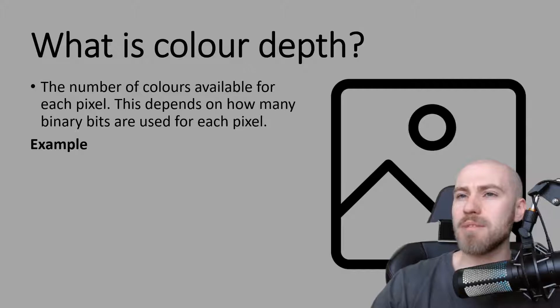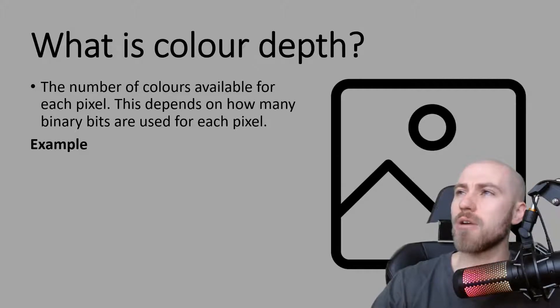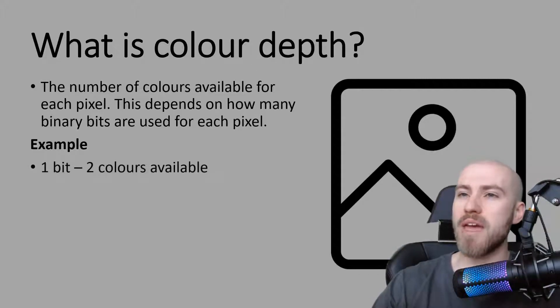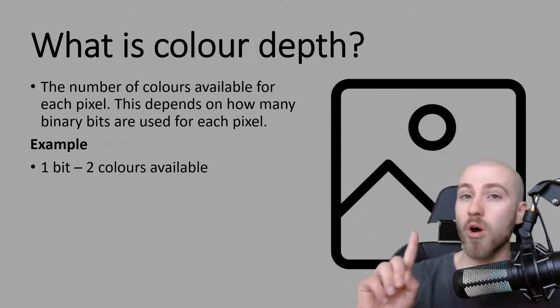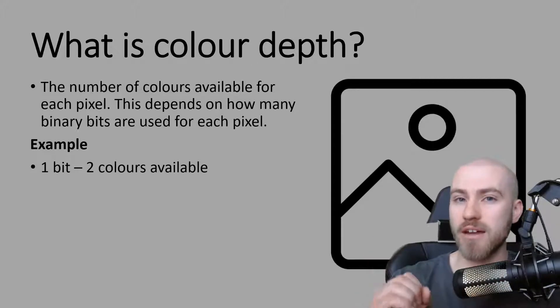What I mean by that — if we think about our binary conversion chart where we often use 8 bits, if we were to use just one of those bits, there'd be two colors available, if it was a 1 or a 0 in that one position.